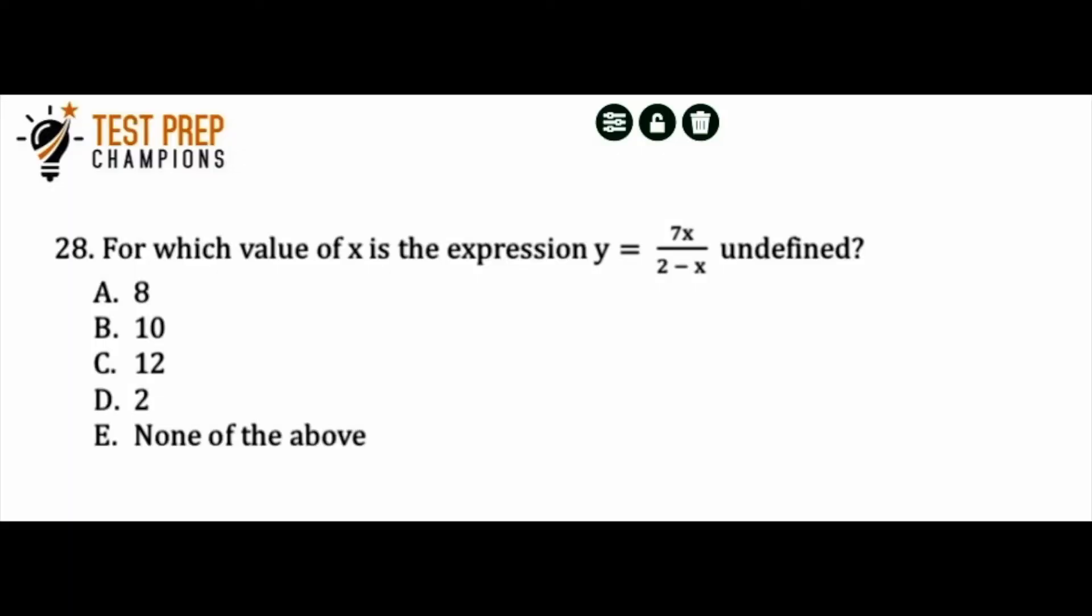Okay, the next question says, for which value of x is the expression y equals 7x over 2 minus x undefined? Pause the video, try to figure this out, and then we'll go over it. So you might get a question that also says, for which value of x is a function undefined? It's the same process here, but the idea is that you can't have a 0 in your denominator. The denominator just means the bottom of a fraction, and you can never have 0 down there.